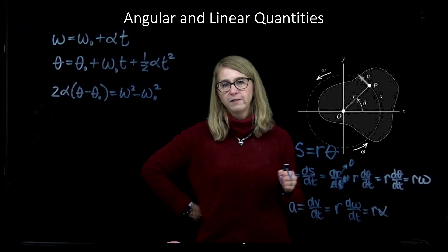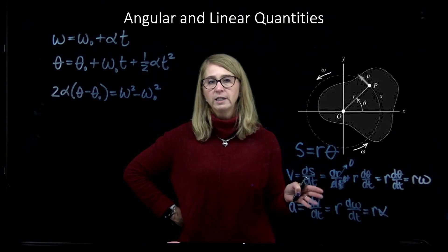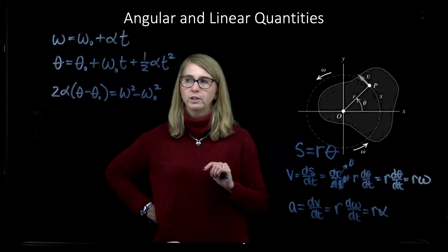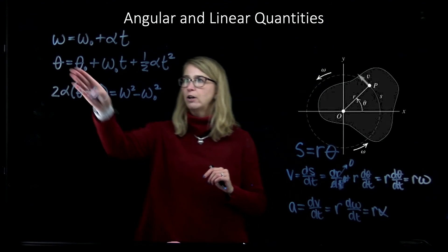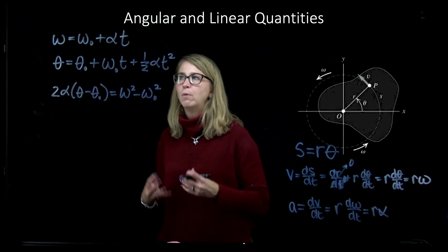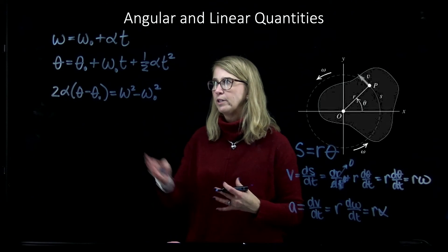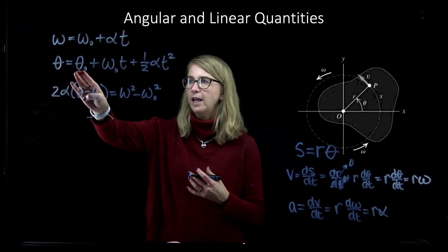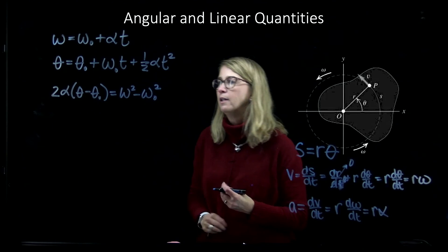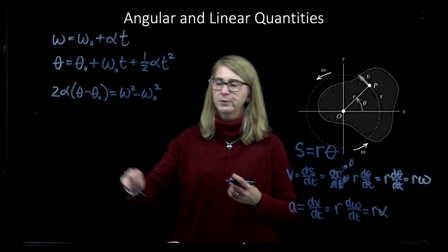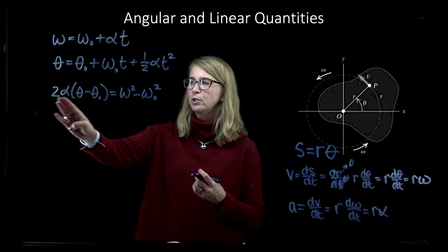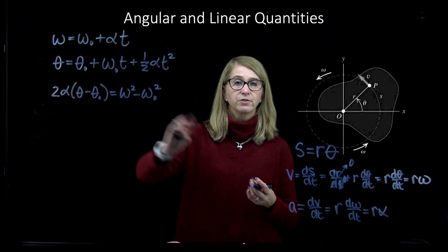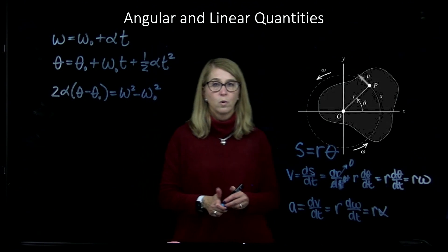So, all the linear quantities are found by taking their angular equivalents and multiplying by the radius that is going from the axis of rotation to the point that you're looking at. You could then see that if I take all of these equations, the first two, if I multiply every term by r, I'm going to get here v is equal to v0 plus at. Here I'll get s is equal to s0 plus v0t plus 1 half at squared. Here I've got to multiply both sides by r squared because of these guys and because I have two angular terms. And I get two times the acceleration times s minus s0, and that's equal to v squared minus v0 squared. And so that is how the angular and the linear quantities are related.